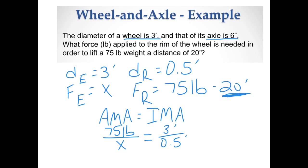So then I say 75 pounds times 0.5 and then divided by three feet. My feet are going to be canceling out, and I will have 12.5 pounds.